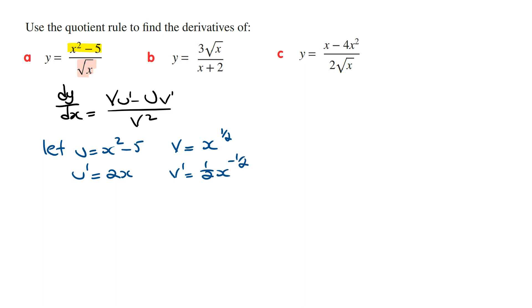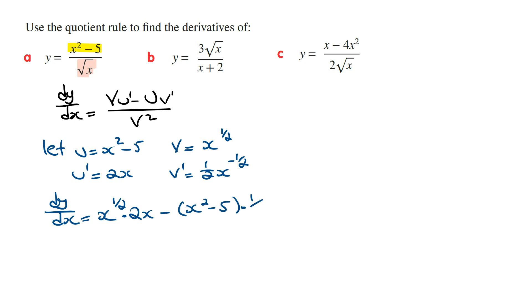From here all we need to do is sub these into the formula to work out dy/dx. So dy/dx is going to be v times u dash, which is x to the power of a half times 2x, and then minus u times v dash, which is x squared minus 5 times a half x to the power of minus a half, all divided by v squared — the square root of x all squared.